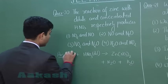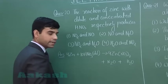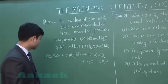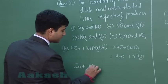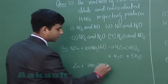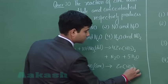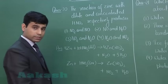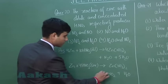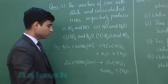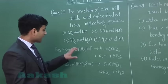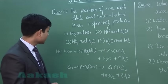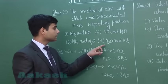Balancing the reaction: 4 moles of zinc reacts with 10 moles of HNO₃ to give 4 moles of zinc nitrate and 5 moles of H₂O, producing N₂O. When zinc reacts with concentrated nitric acid, it gives zinc nitrate, NO₂, and water, with 4 moles of HNO₃. So dilute HNO₃ gives N₂O and concentrated HNO₃ gives NO₂. The correct answer is option number 4: N₂O and NO₂.